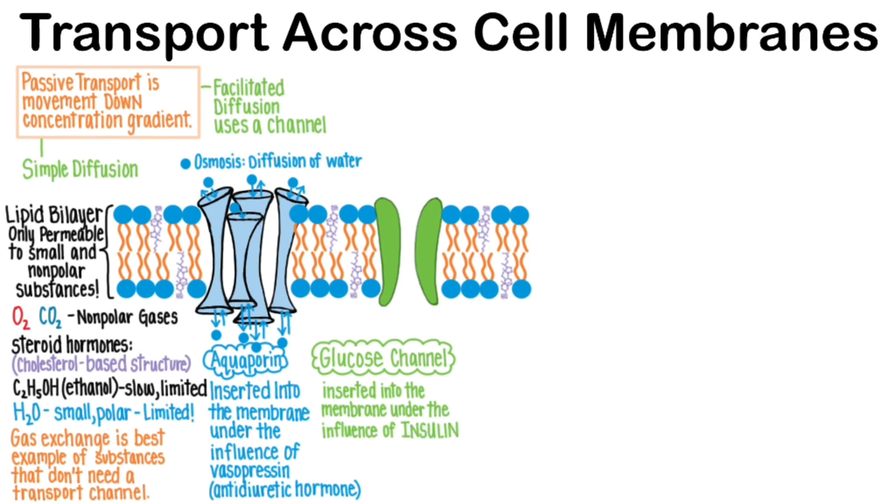Glucose can then move down its concentration gradient from the bloodstream into the cell. This is how insulin lowers blood sugar.